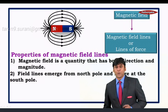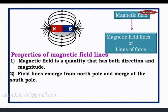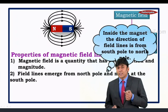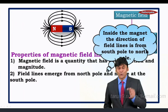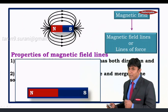The second property: field lines emerge from the north pole and merge at the south pole. But inside the magnet, the direction of field lines is from the south pole to the north pole.